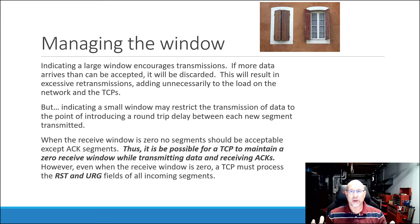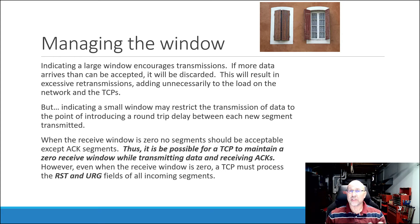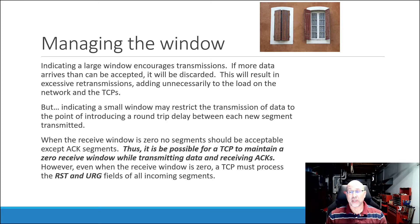Another key point: even if the window is closed — I've received a lot of data, I'm processing it, and I haven't acknowledged anything — that doesn't mean I can't still receive TCP segments from the other side. The segments I'm allowed to receive are acknowledgements. I can't get any more new data sent to me, but I can receive and process acknowledgements, meaning if I sent data out, the opposite end can acknowledge those. We also see that reset and urgent pointer segments must be processed even if your window is closed.